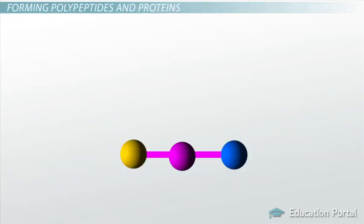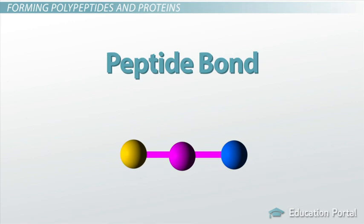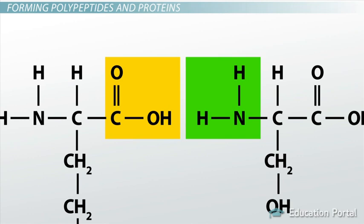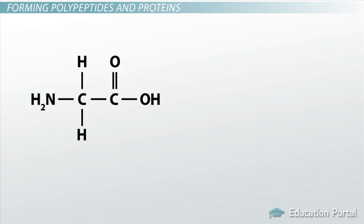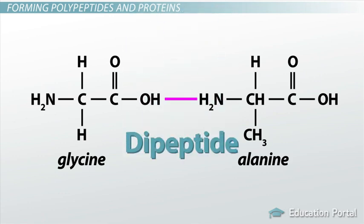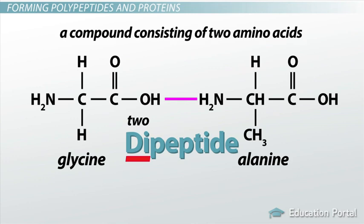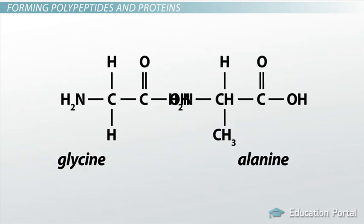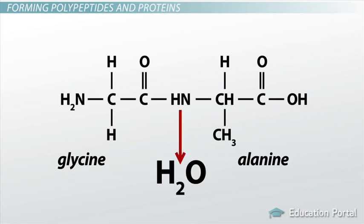Inside your cells, the individual amino acids can bond together by forming a peptide bond, which is simply a chemical bond that joins amino acids together. More specifically, peptide bonds join the carboxyl group of one amino acid with the amino group of another. For example, the amino acid glycine can bond with the amino acid alanine to form a dipeptide. The prefix di means two, so a dipeptide is defined as a compound consisting of two amino acids. In our dipeptide example, we see that glycine gives up an atom of hydrogen and an atom of oxygen, while alanine loses an atom of hydrogen. Together, they release a molecule called H2O — a water molecule.